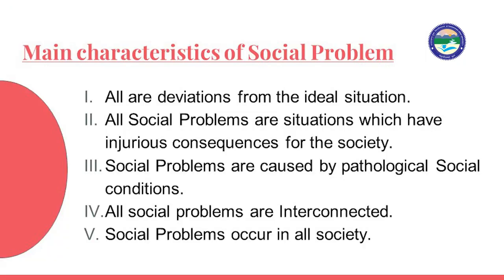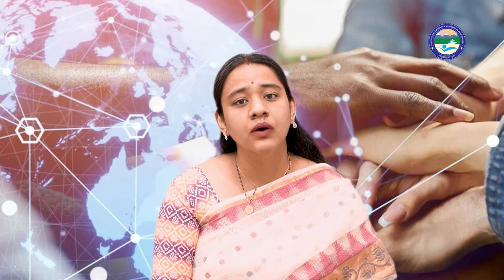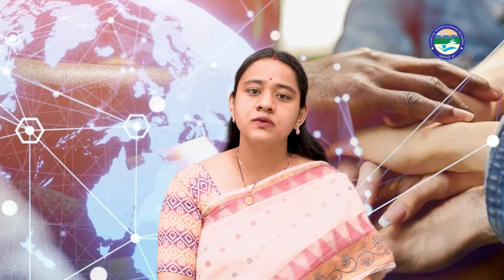Now we will talk about the main characteristics of social problems. First, there is deviation from the ideal situation — all social problems are situations with injurious consequences for society, caused by pathological social conditions. Social problems are interconnected in nature and occur in all societies, whether rural or urban, national or international.